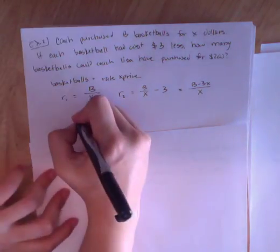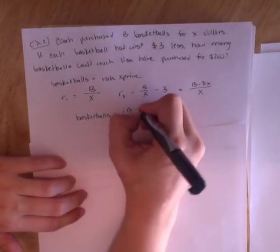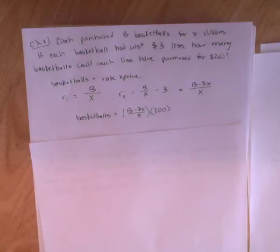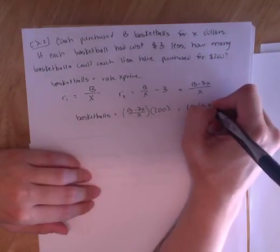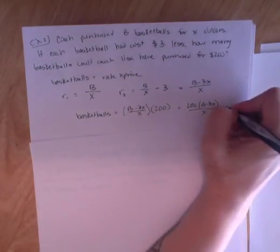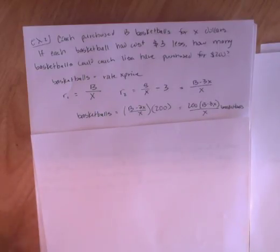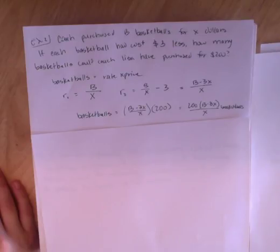If I made this into one fraction, this would be B minus 3X all over X. I want to know how many basketballs could Coach Lisa have purchased for two hundred dollars. So I do my rate times my two hundred dollars. This ends up giving me, this is exactly how we did the last problem. Nothing on it has changed.